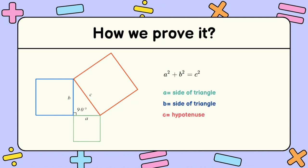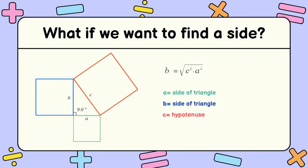So now let's say you want to find a side. So earlier we looked at how we can find the hypotenuse, but let's say the hypotenuse is given and a side is given, but you want to find the other side. So let's say you want to find b. So how do you find it? It's as simple as that. You just subtract c squared, which is the hypotenuse, and a squared, which is a side.